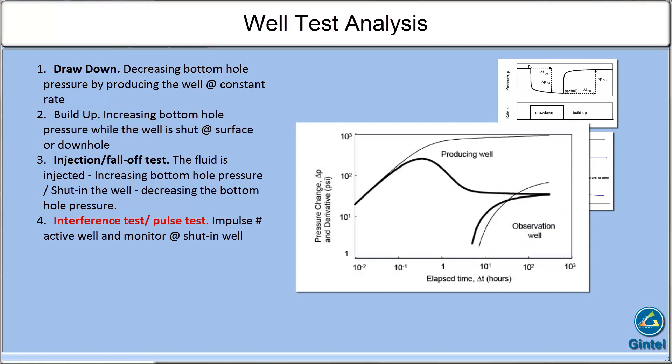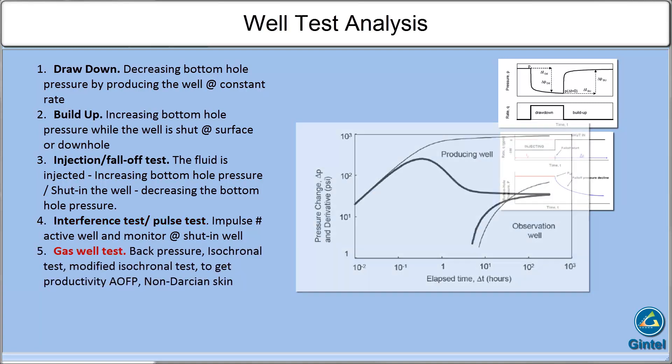Interference test, or pulse test, is a multiple-wells test. This technique involves two wells: active and observation. They are to establish communication and reservoir parameters between the wells.